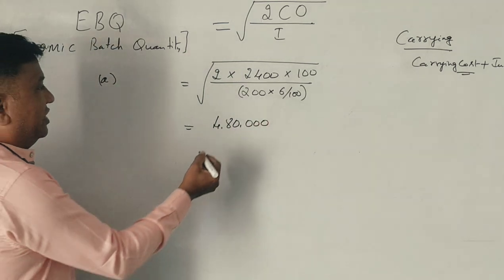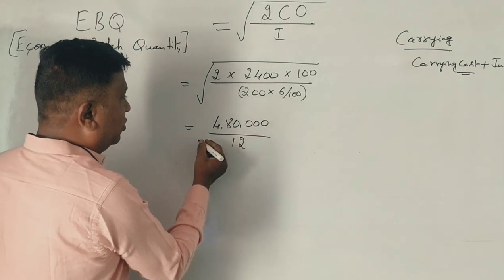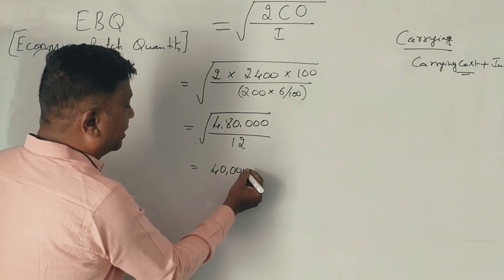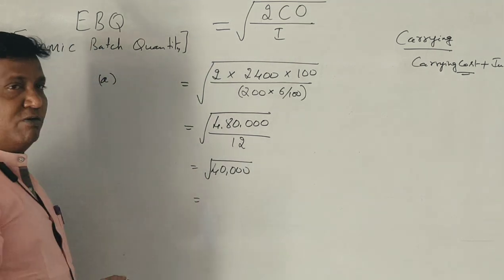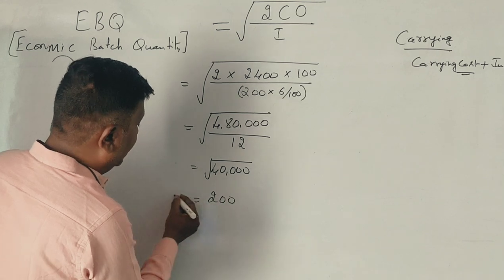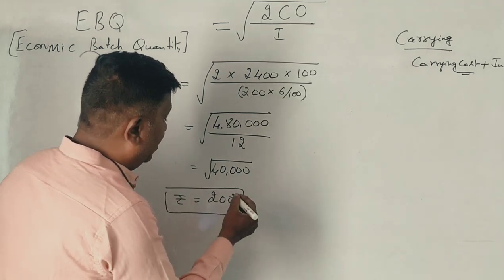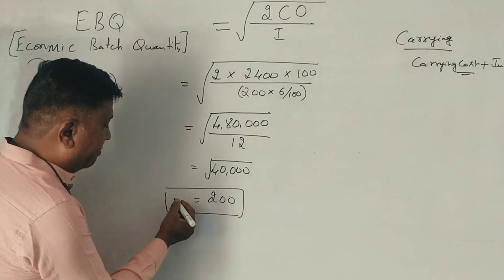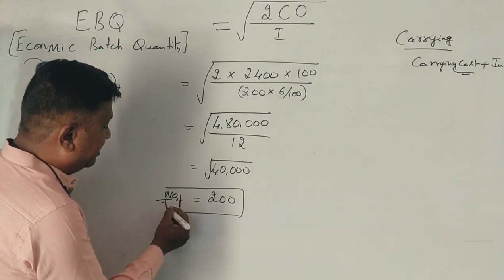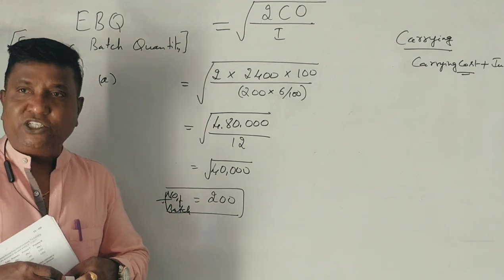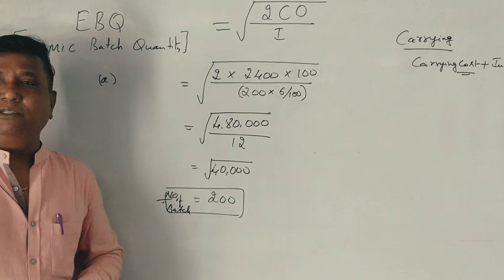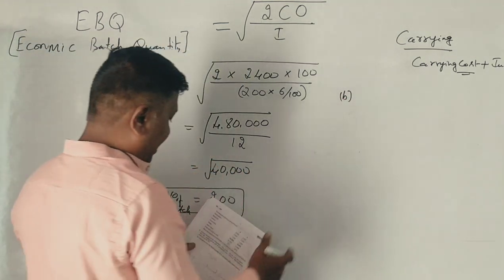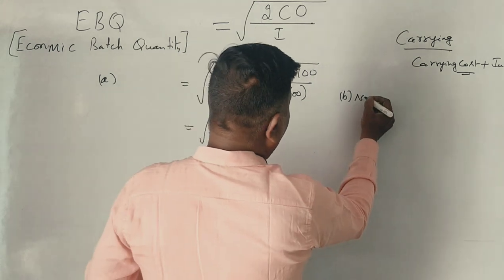4,80,000 divided by 12 gives 40,000. Taking the square root, EBQ = 200 units.